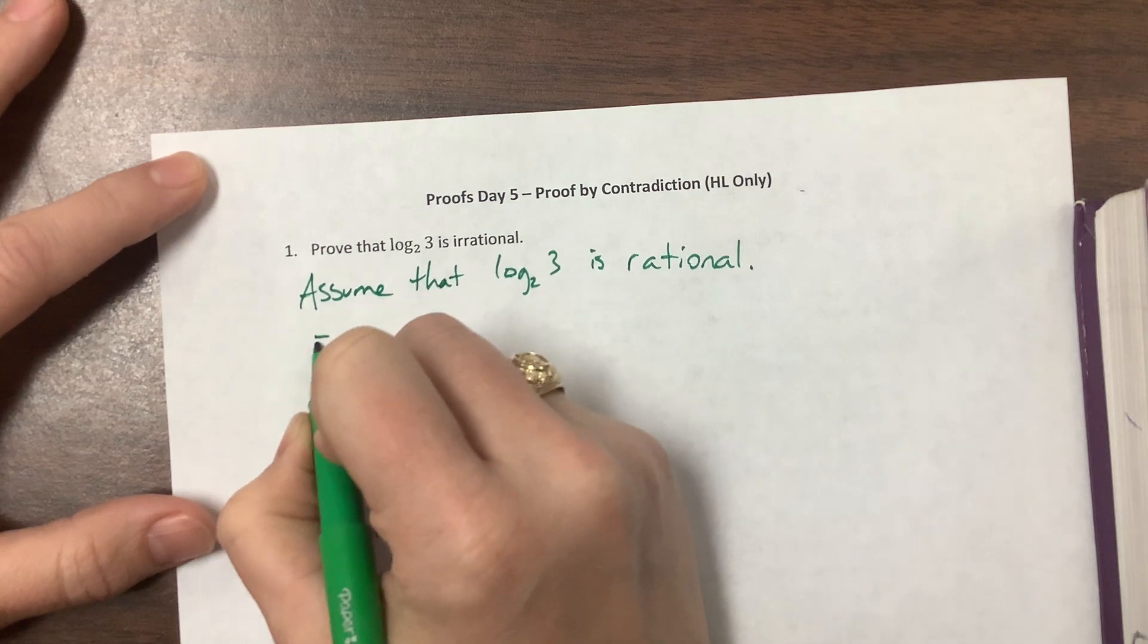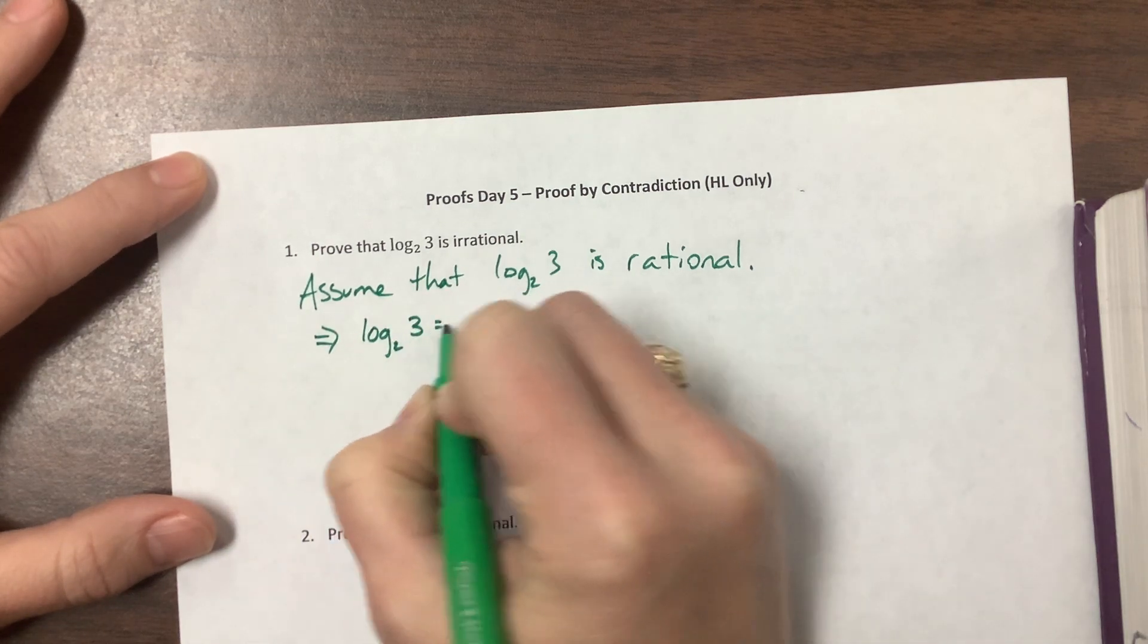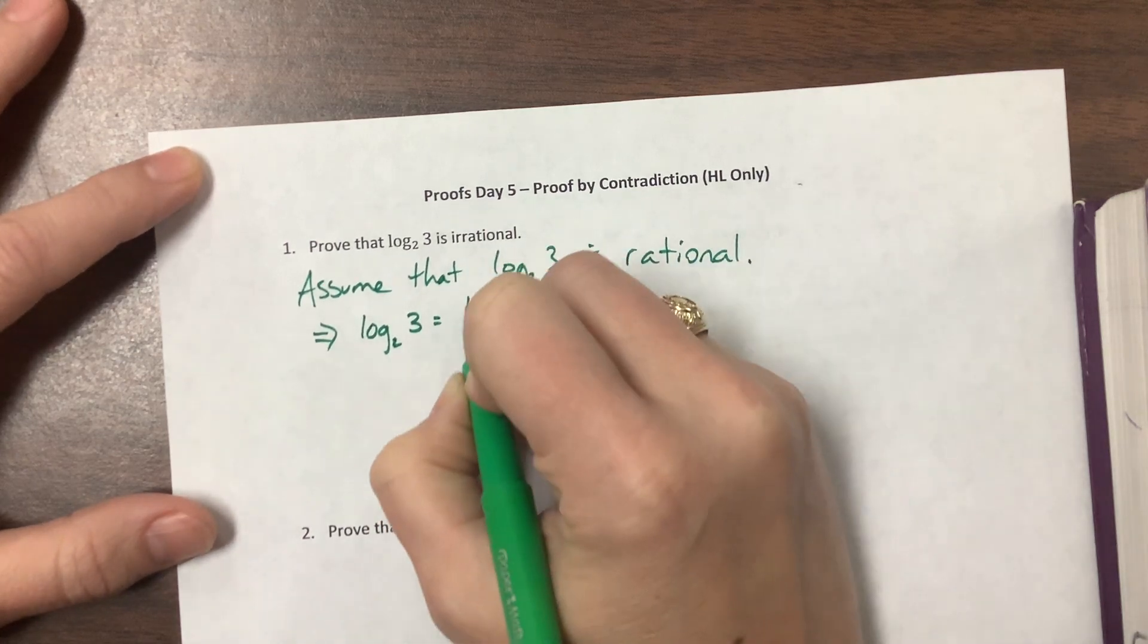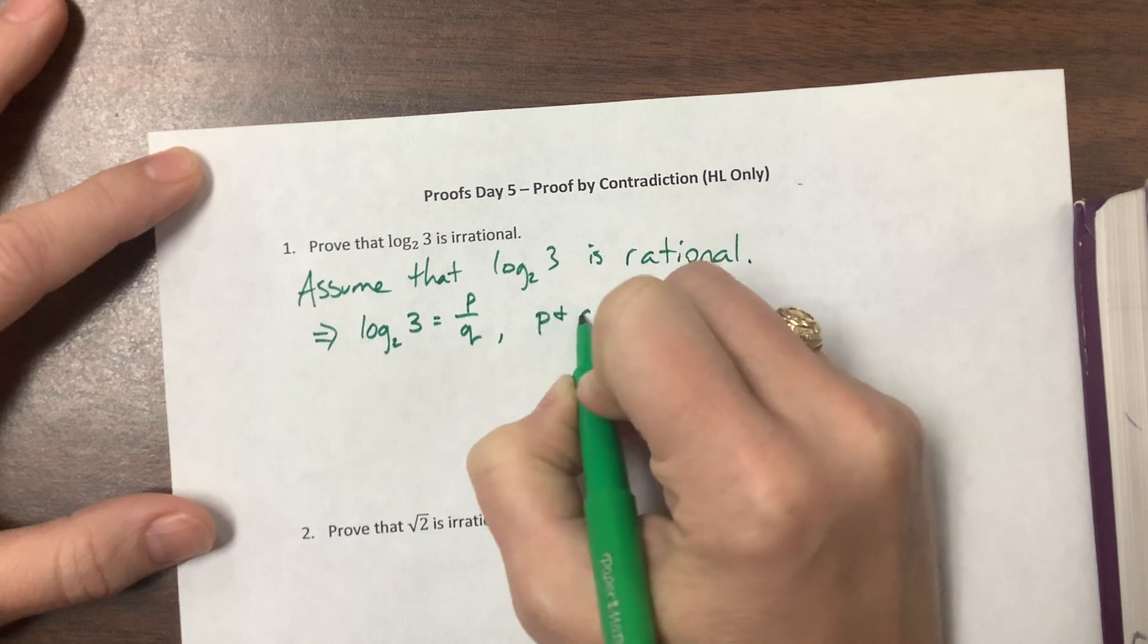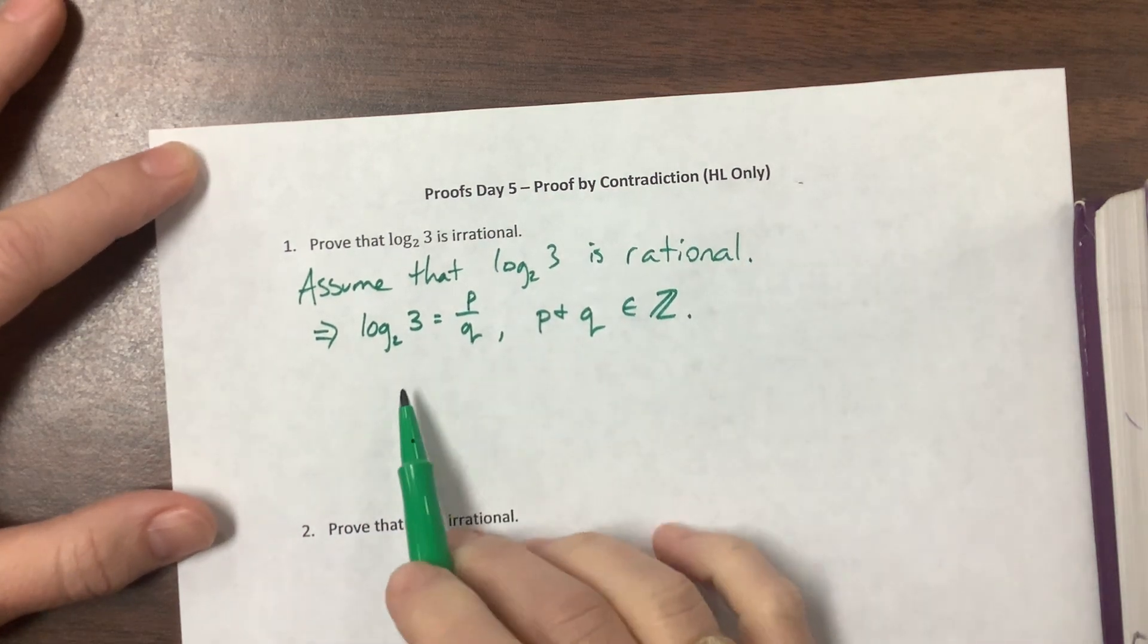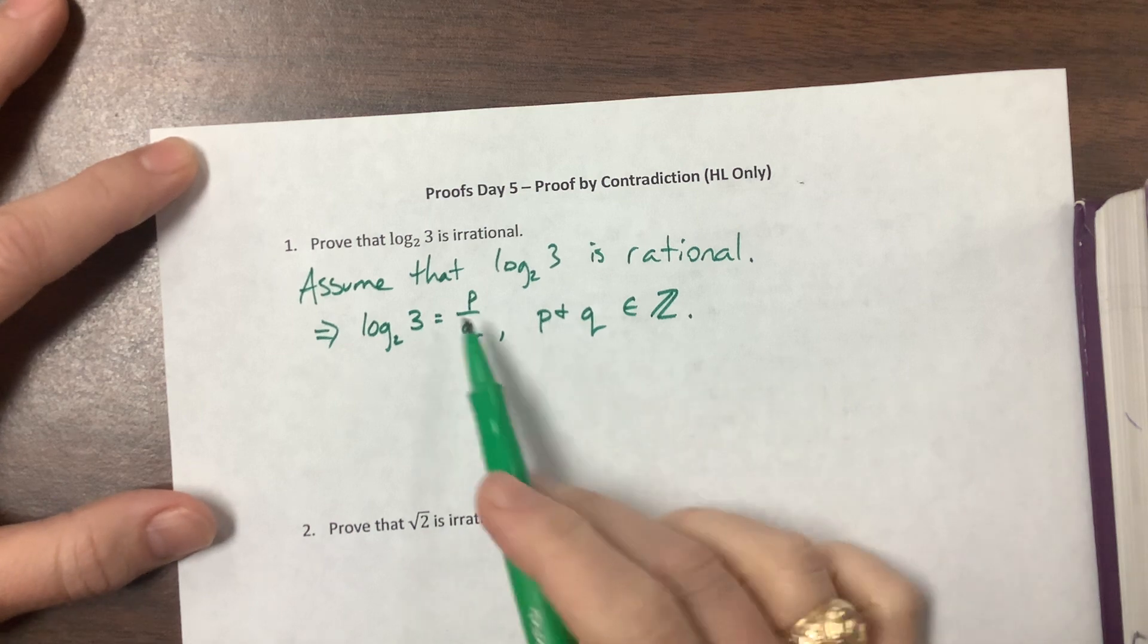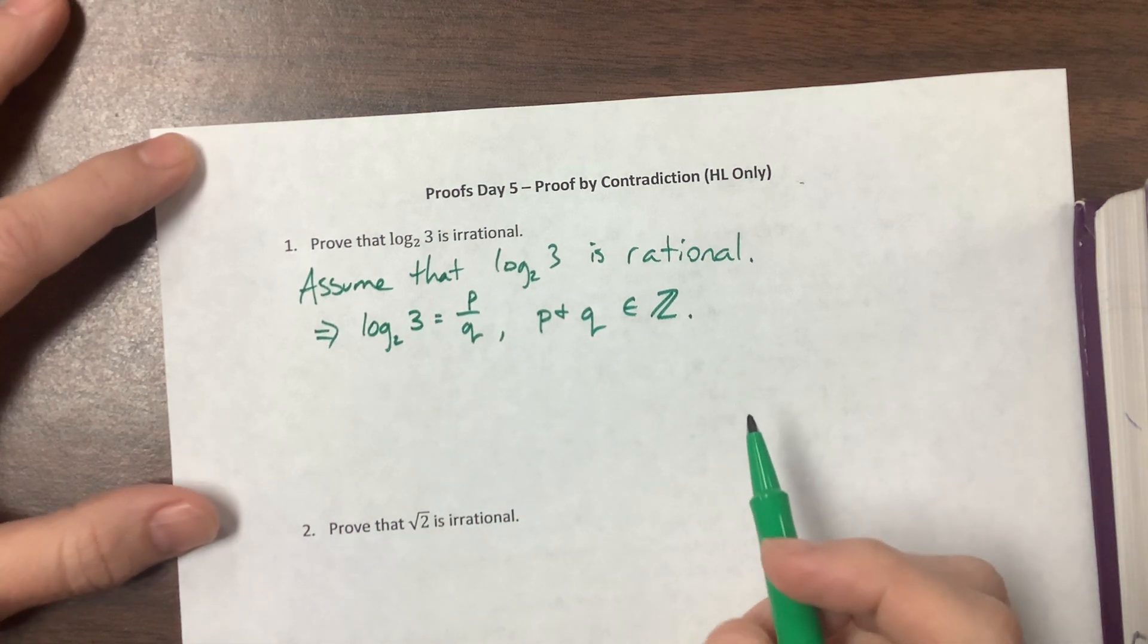If that's true, then this would imply that log base 2 of 3 could be written as a rational number, p over q, where p and q are both elements of the integers. If it's rational, then we have to be able to write it as a fraction where the numerator and denominator are integers.